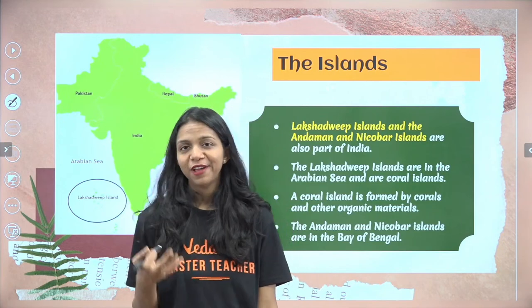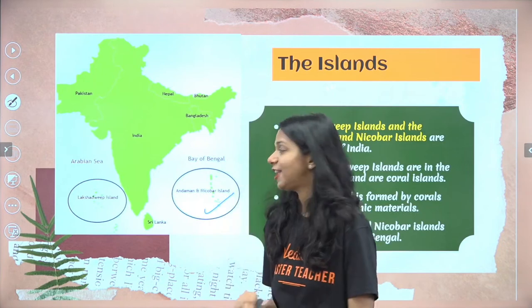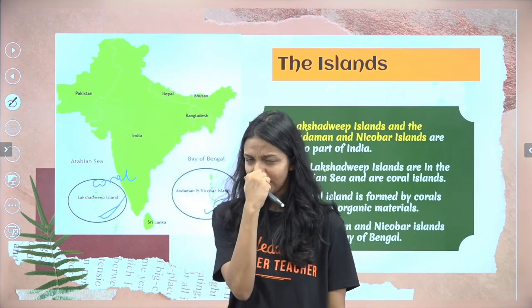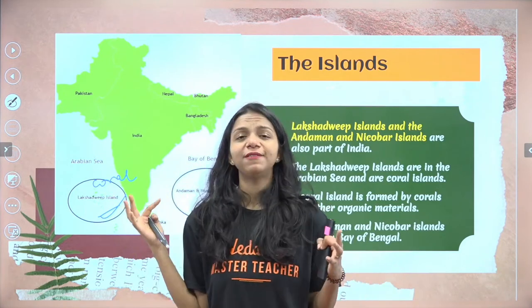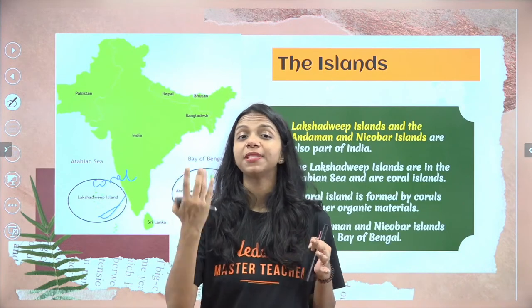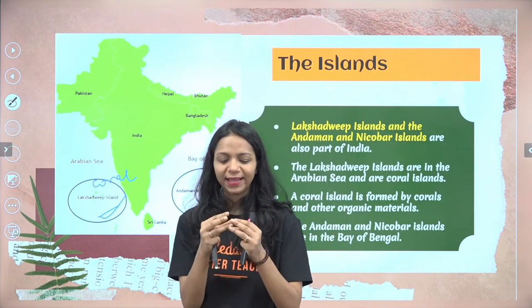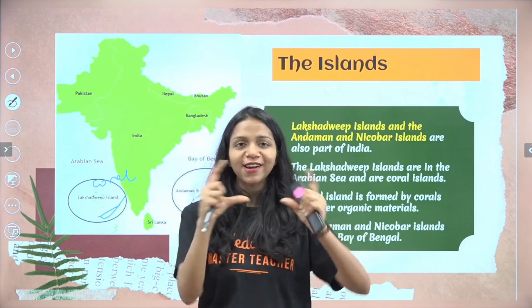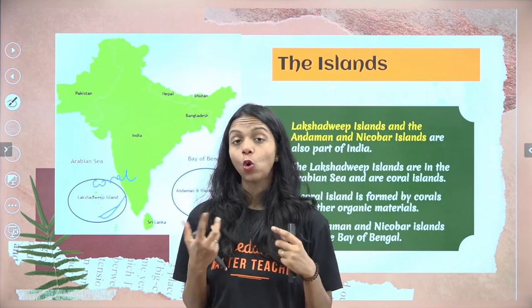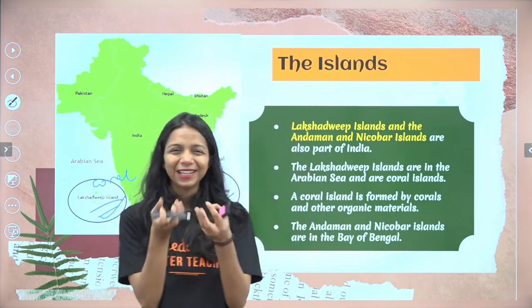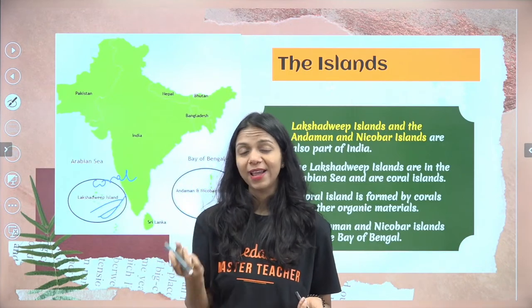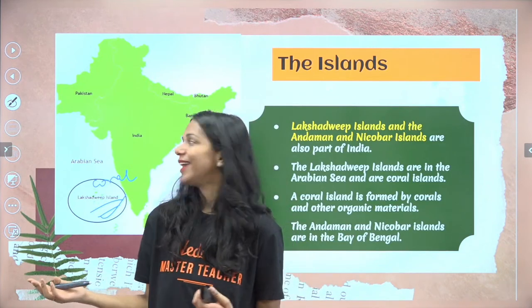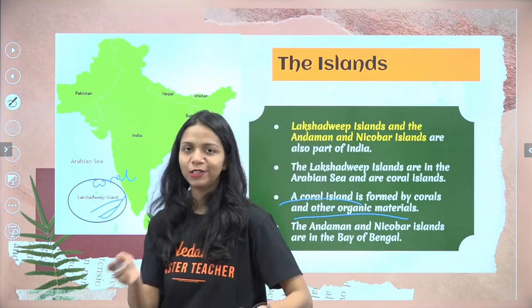We have two major bodies of islands. One is the Andaman and Nicobar Islands, and the other is the Lakshadweep Islands. Lakshadweep Islands are also called Coral Islands. Coral islands are formed by sea organisms — over millions of years, these organisms die, leaving their skeletal remains. New organisms grow on top of them, and this entire layered structure is called a Coral Reef. Lakshadweep has beautiful coral reefs and vegetation, but they are very sensitive and can be destroyed by pollution. The Andaman and Nicobar Islands are in the Bay of Bengal.